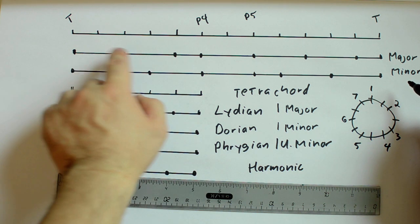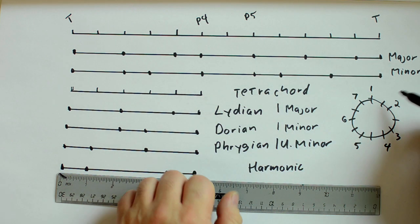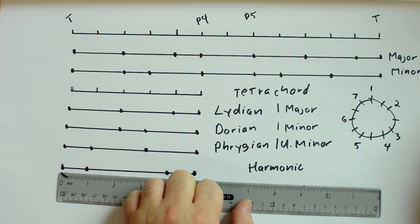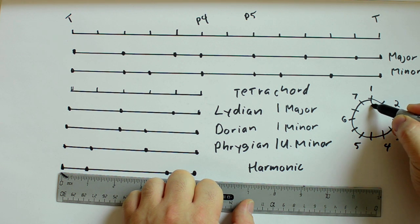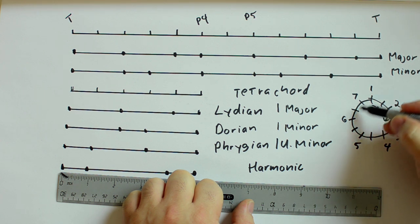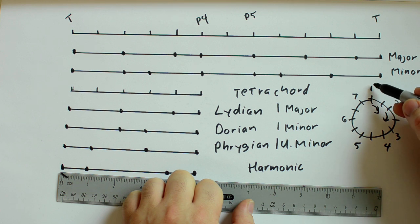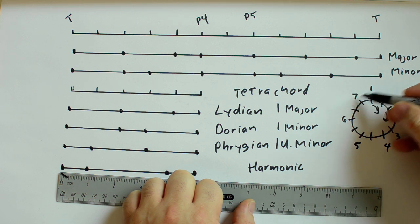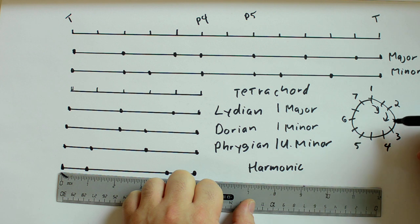So if the major scale is whole, whole, half, whole, whole, whole, half — this is whole, whole, half, whole, whole, whole, half. And the seven natural modes, the so-called natural modes, are simply starting on one of these notes and making a complete loop. The one that starts on 1 at the 12 o'clock position would be the Ionian mode. Starting on 2 would be the Dorian mode. Starting on 3 would be the Phrygian. Starting on 4 would be the Lydian. Starting on 5 would be the Mixolydian. 6 would be Aeolian. And 7 would be Locrian. So these are the seven so-called natural modes.